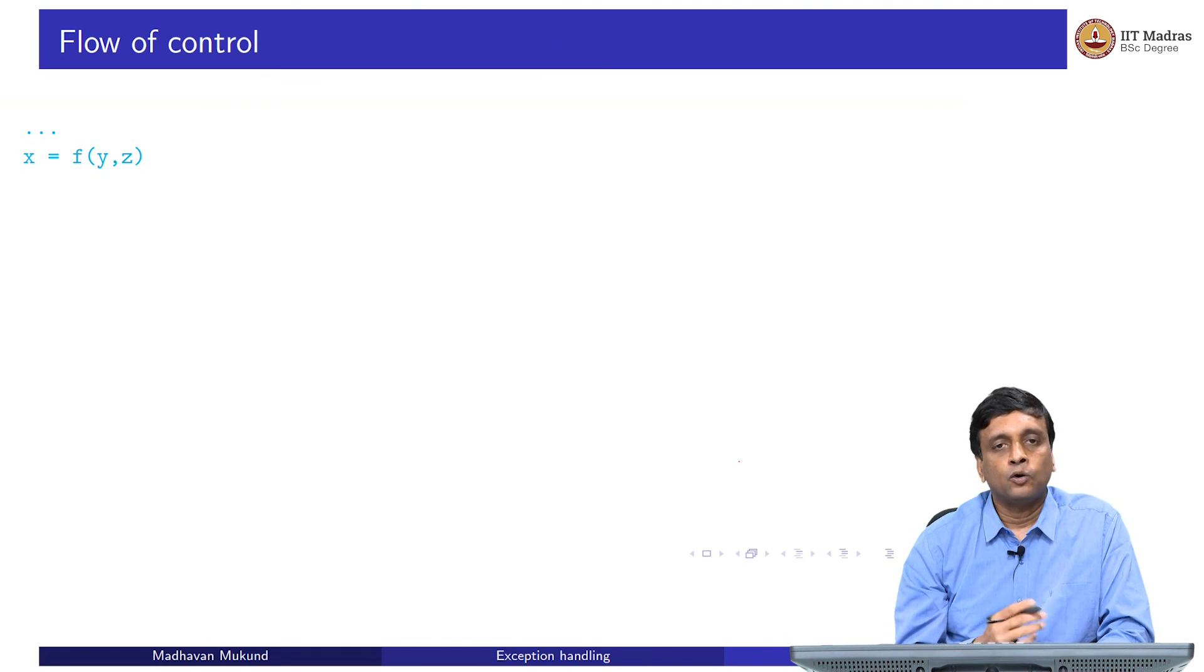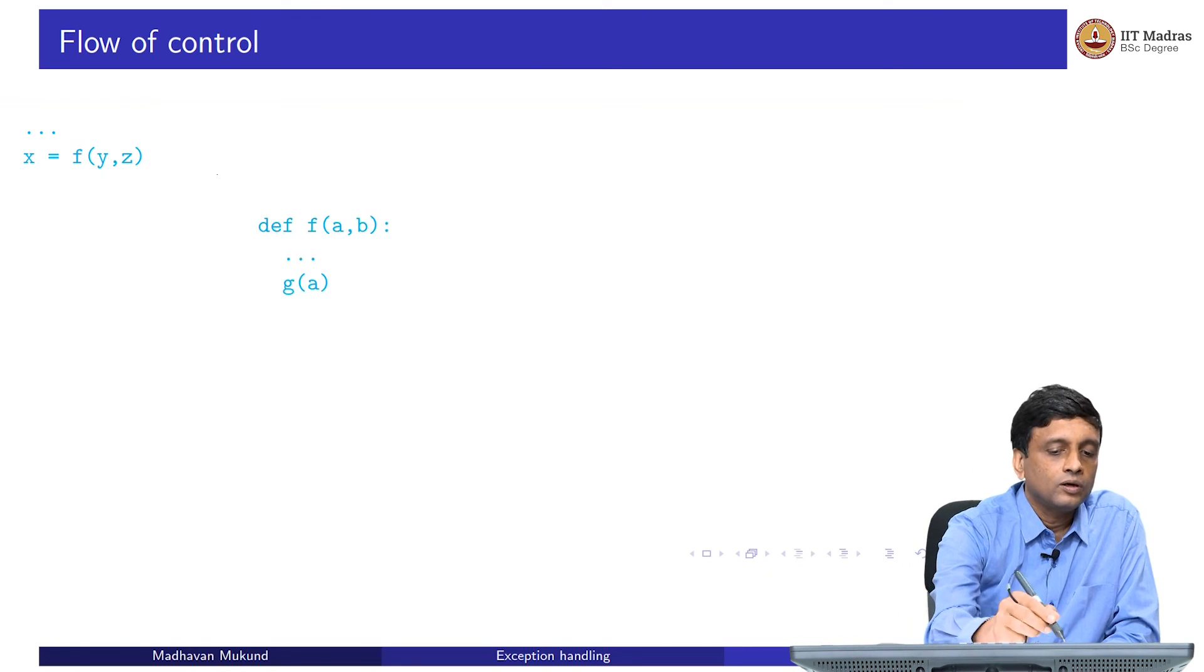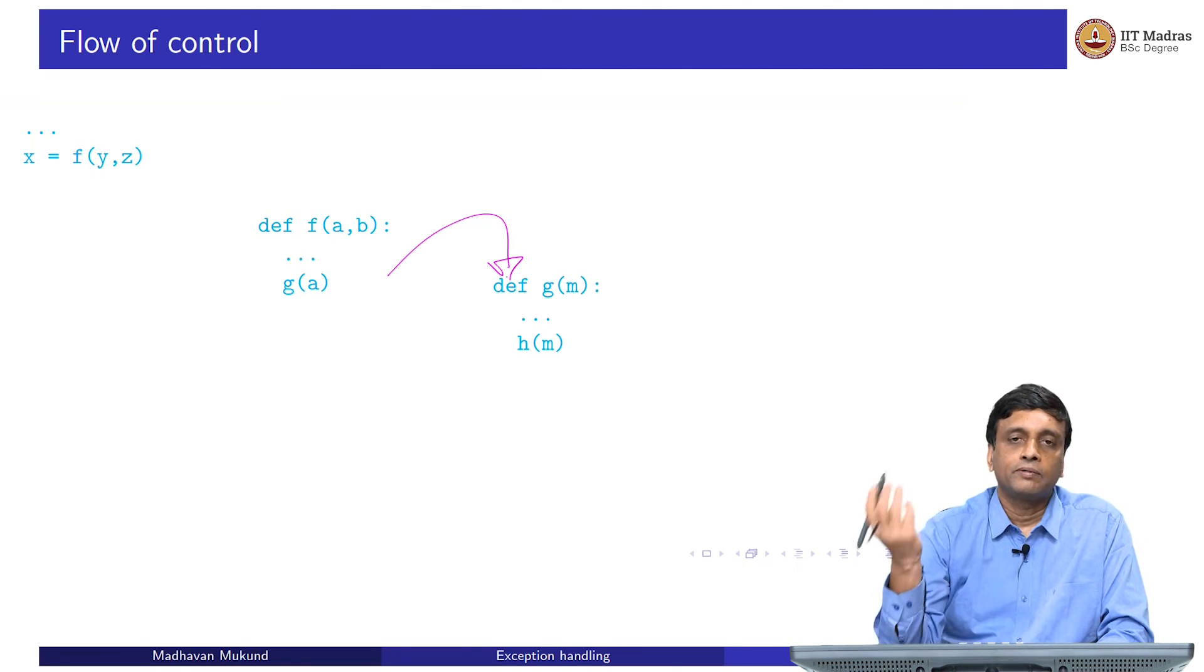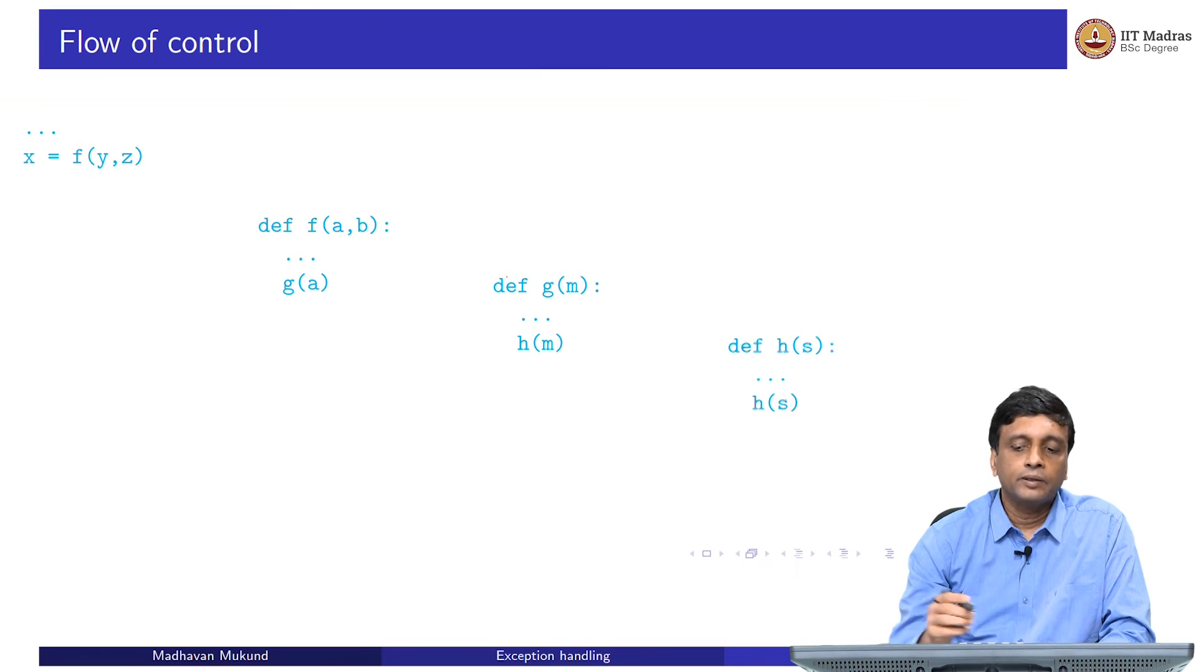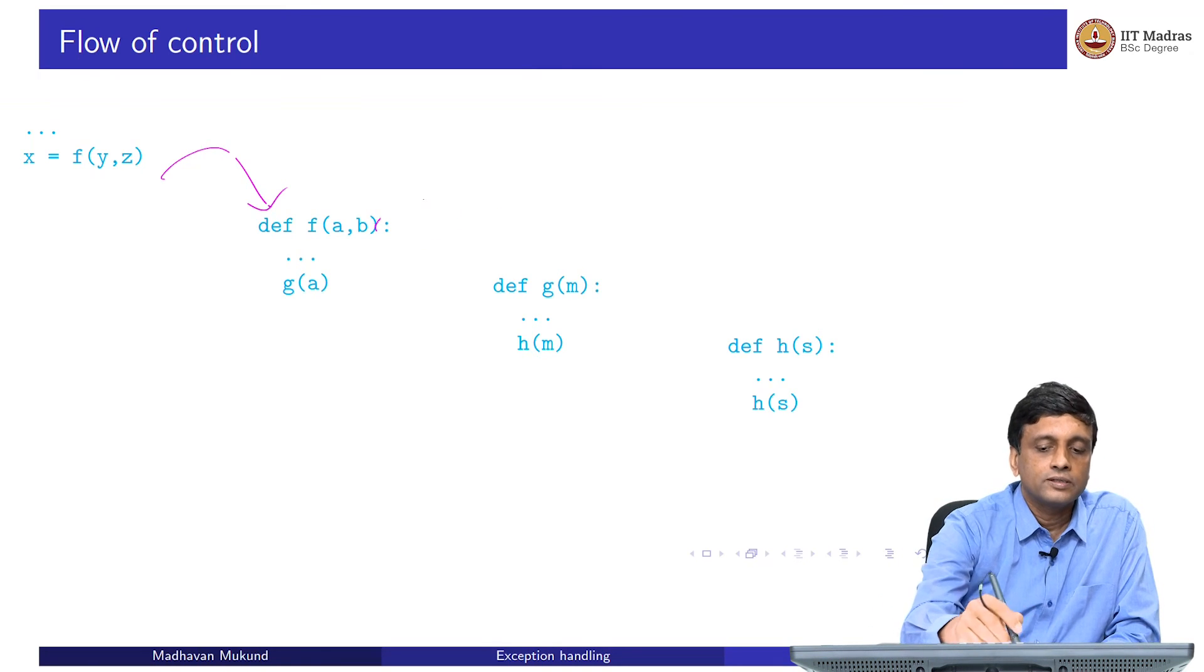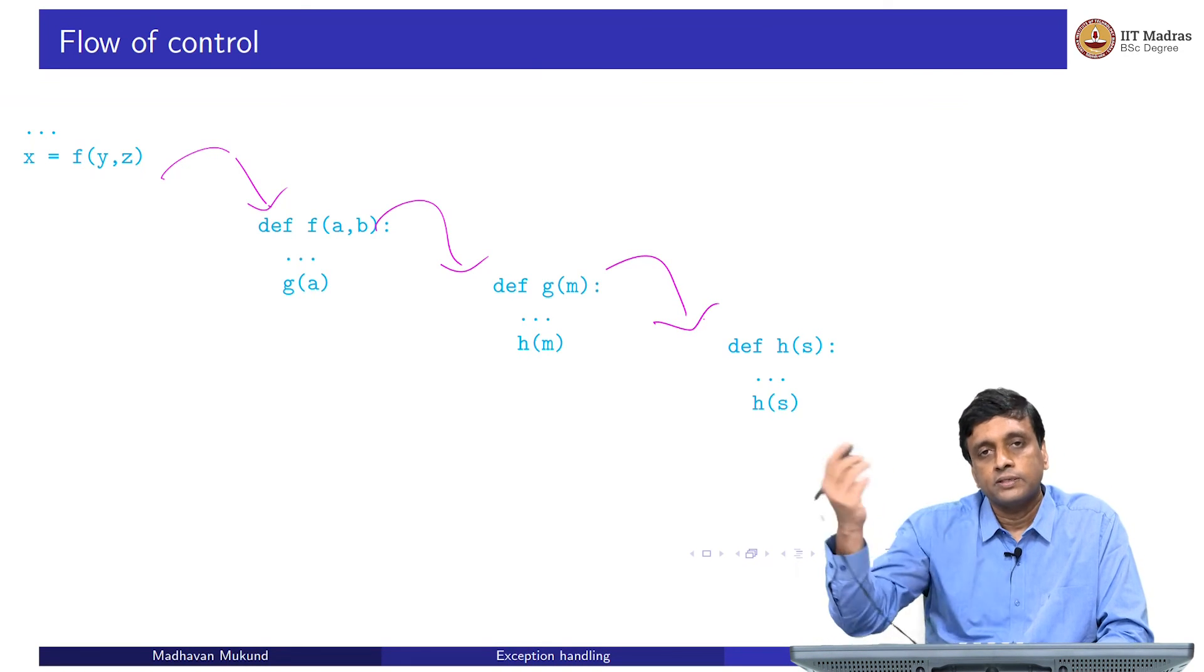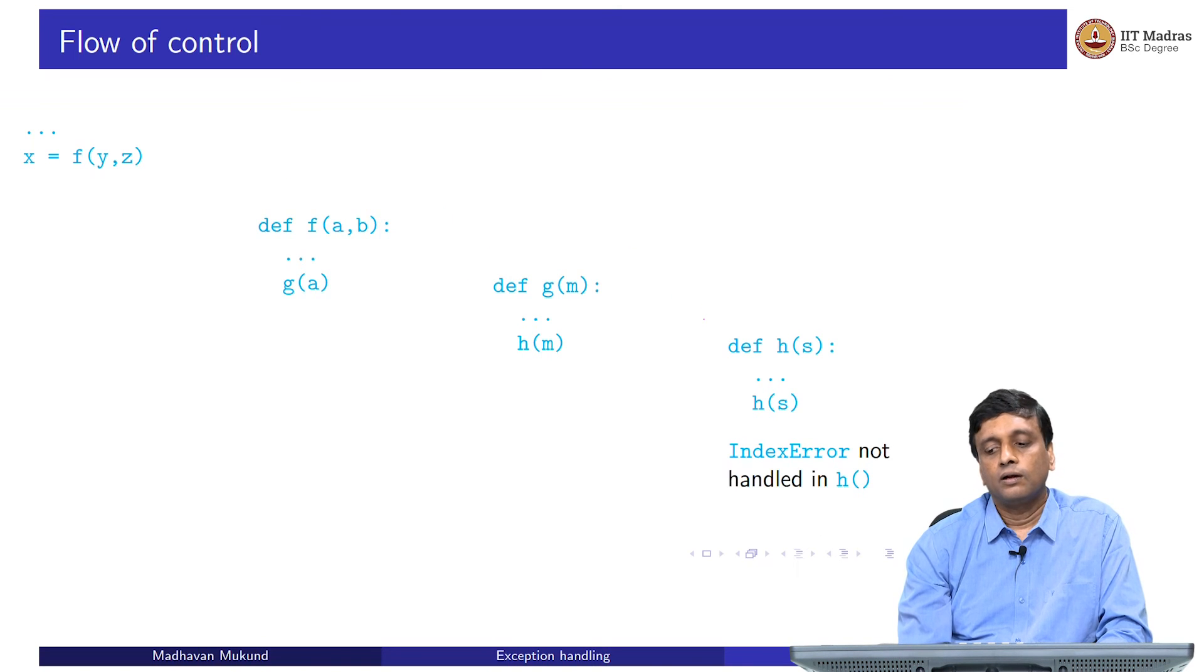To conclude this discussion of exceptions, let us see how this whole thing actually works. Supposing I have this main code, which calls a function f. This will transfer control to f, which is defined somewhere else. Now, f in turn may call another function g. This will again transfer control to g, which is defined yet another place. And g in turn may call an h. We have the sequence of calls. This called this, this called this, this called this. We started with calling f and eventually unknown to us, in some sequence, h has got called. And now, h generates an error, and it does not internally handle it. What happens to this error?